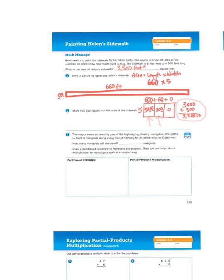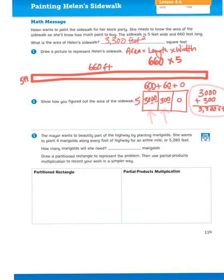I'll explain. The second problem here, it says the mayor wants to beautify part of the highway by planting marigolds. She wants to plant four marigolds along every foot of highway for an entire mile, or 5,280 feet. How many marigolds will she need? Well, the problem here is 5,280 times four. Because for every foot of highway, she wants to plant four marigolds along an entire mile.